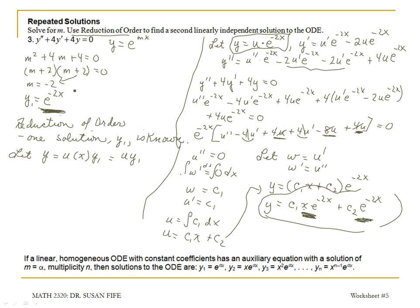In general, when you have repeated solutions, you can just multiply by x. The rule is: if a linear homogeneous ODE with constant coefficients has an auxiliary equation with a solution m equals alpha of multiplicity n, then the solutions to the ODE are e to the alpha x, x times e to the alpha x, and you keep multiplying by additional factors of x until you have n solutions corresponding to the multiplicity.